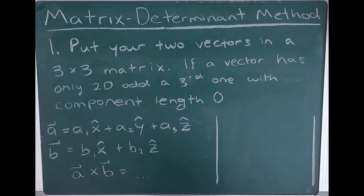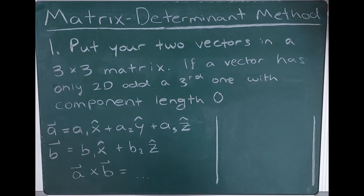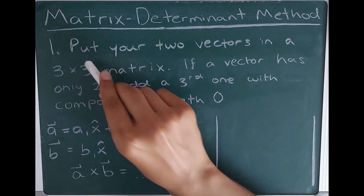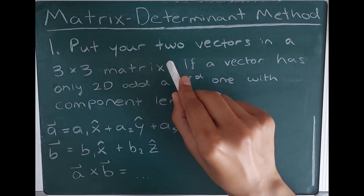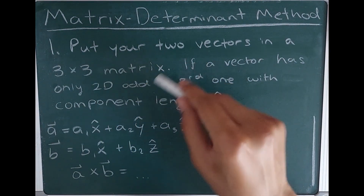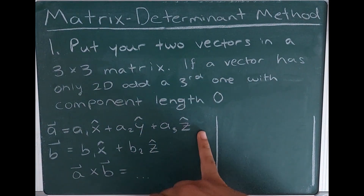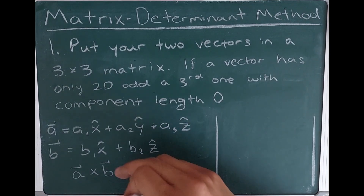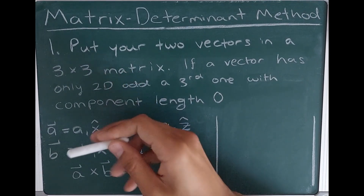This first method for calculating exact cross products is the more commonly taught one. It's where you make a matrix and a determinant. What you're going to do is you're going to put your two vectors in your cross product — let's say A and B — into a 3x3 matrix.